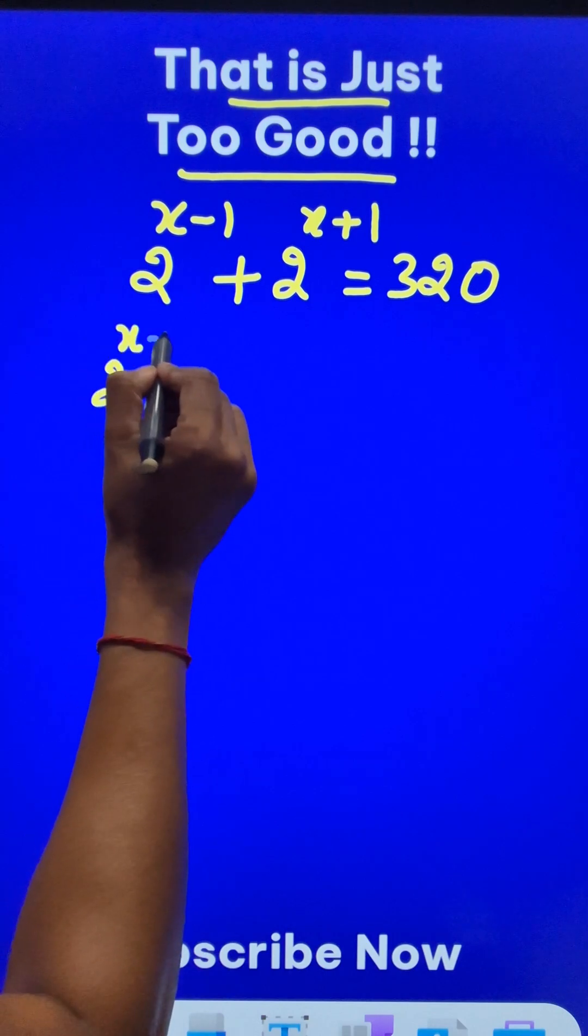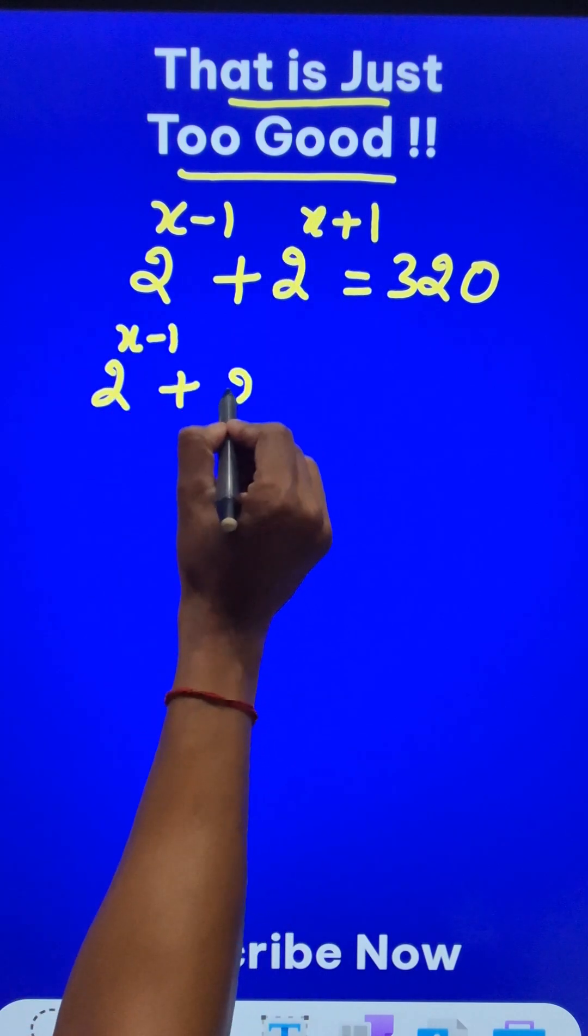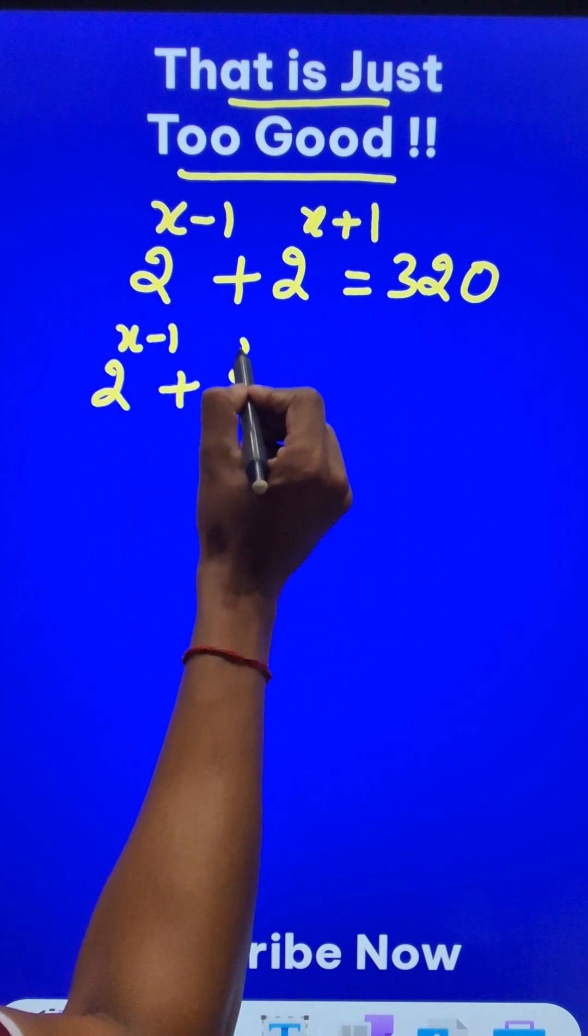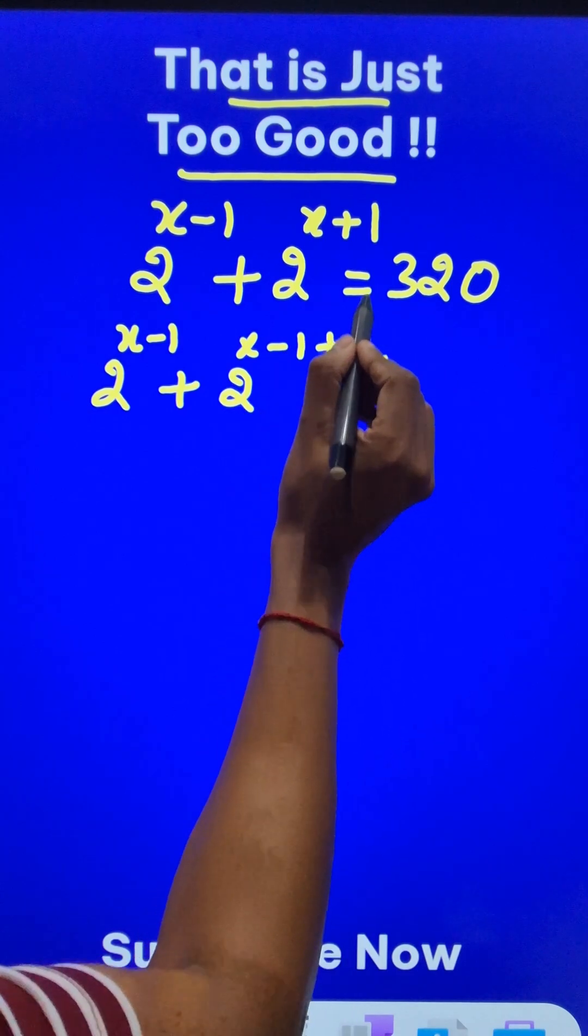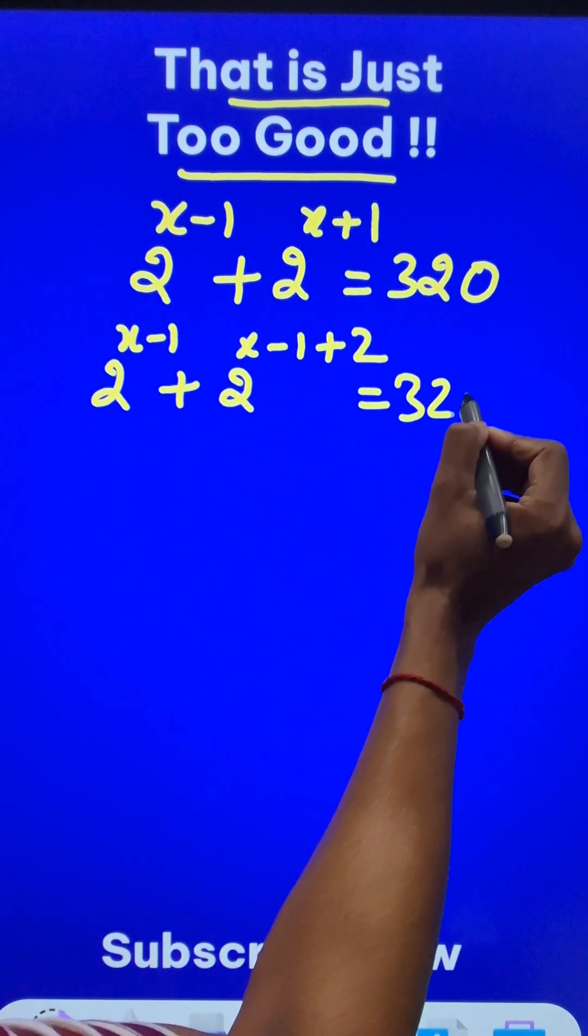So what am I going to do? I am going to write this higher power as this power x minus 1 and then plus 2. So minus 1 plus 2 is plus 1. It doesn't change my equation.